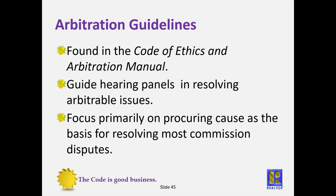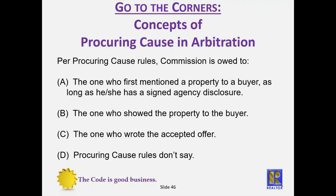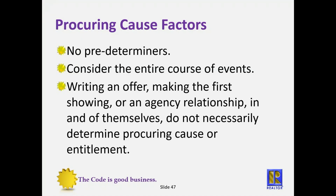The arbitration guidelines are found in the Code of Ethics and Arbitration Manual, available at NAR.REALTOR. It guides hearing panels in resolving arbitrable issues. The primary focus is on procuring cause as the basis for resolving most commission disputes. Per procuring cause rules, commission is owed to... is it the one who first mentioned a property to a buyer? The one who showed the property? The one who wrote the accepted offer? Or do procuring cause rules just not say? The answer is D — procuring cause rules don't say. Every case must be heard on its own merits, with no predeterminers. You have to consider the entire course of events.